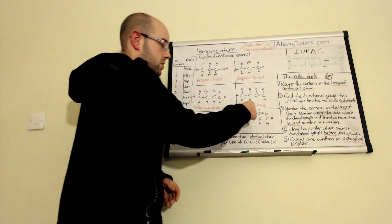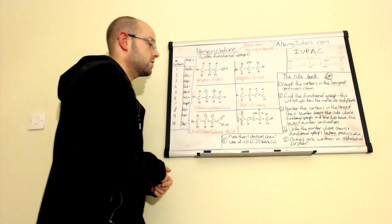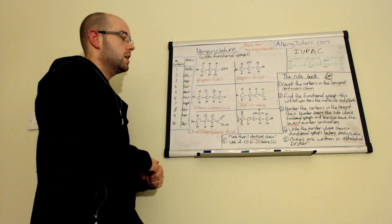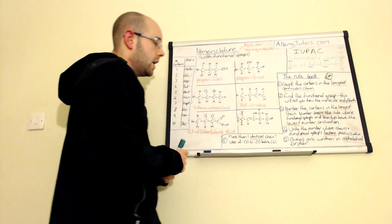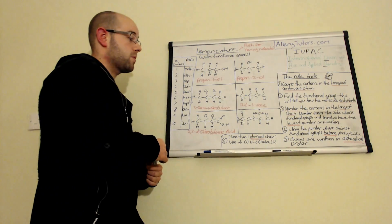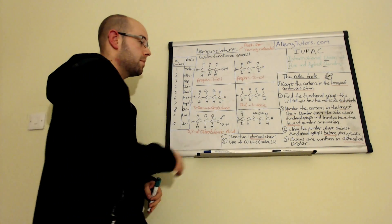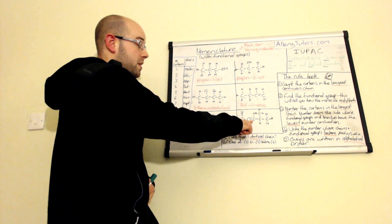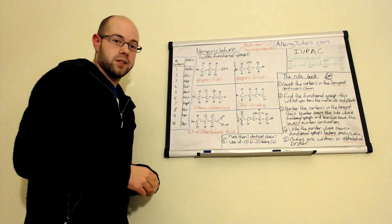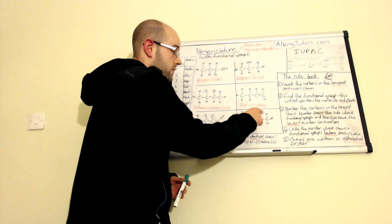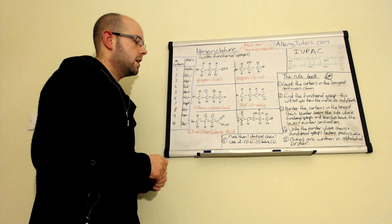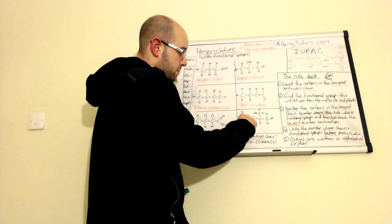The longest chain is five carbons either way, so for simplicity we'll go straight along and put our numbering in there. We've got a few functional groups, but the one that goes on the end is the alkene - we always end molecules with the alkene suffix 'en'. Iodine is a prefix that goes before, and the branching is also a prefix. The only thing that goes on the end is the 'ene' suffix.